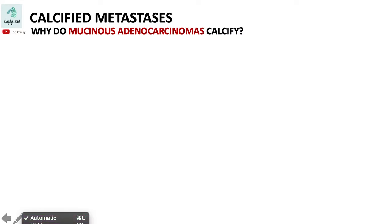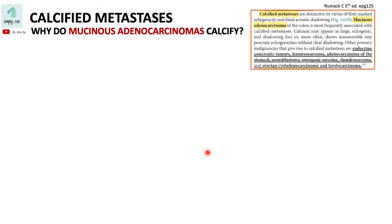Have you ever wondered why some types of metastasis would calcify? We see a list of calcified metastases frequently, and for some listed types — like those coming from the bone or from a cartilaginous forming mass — it's not surprising why they would form calcified metastasis.